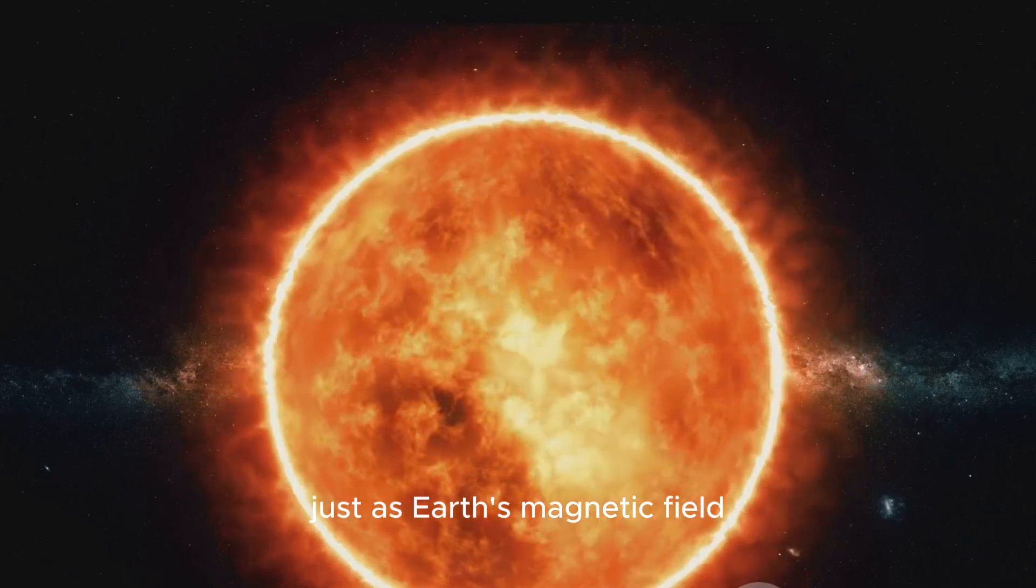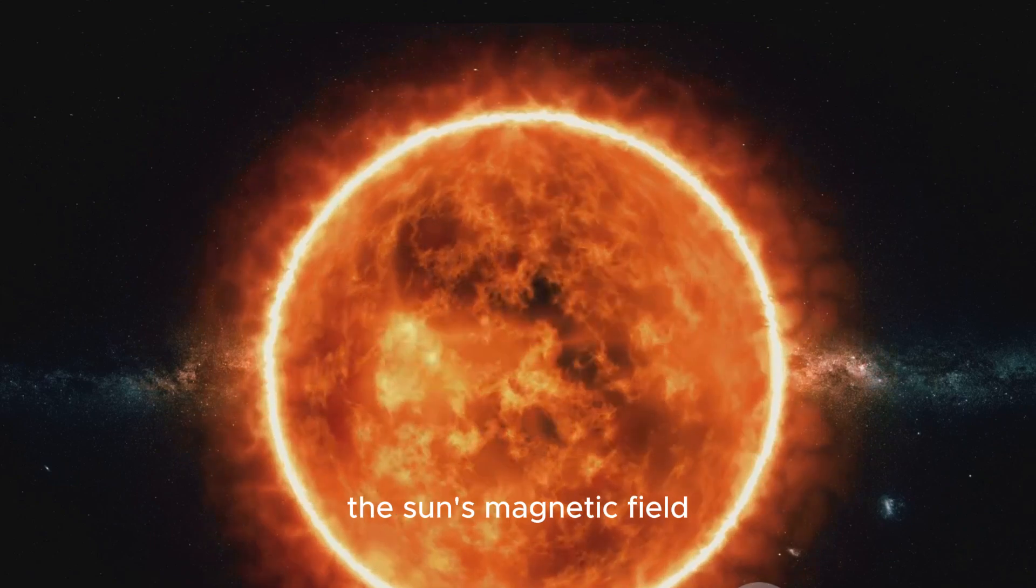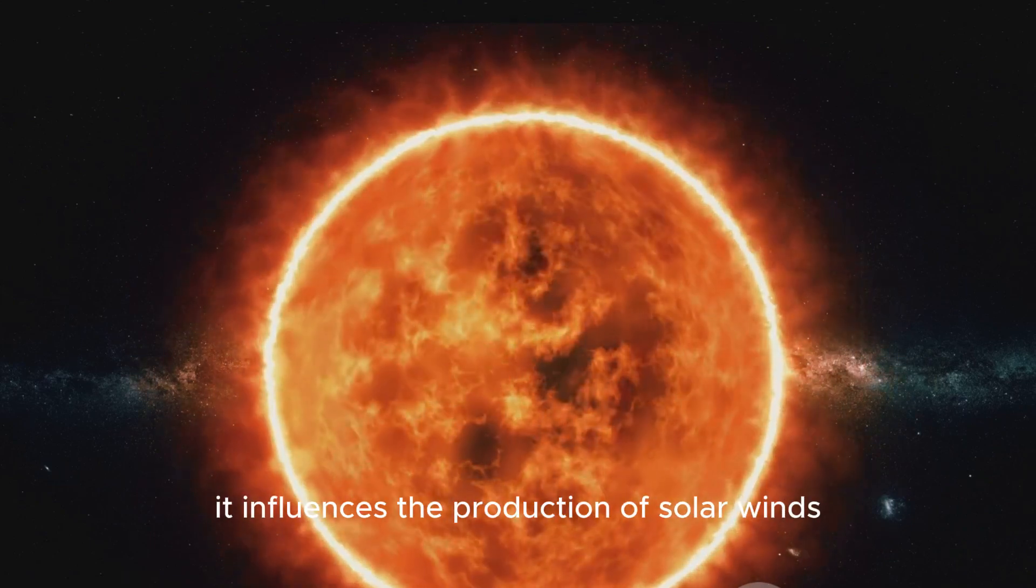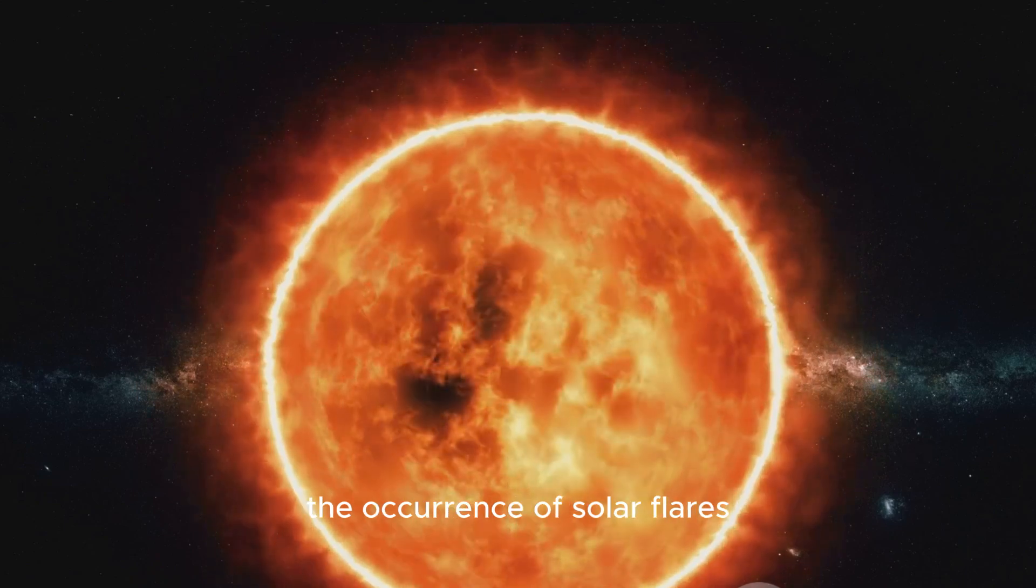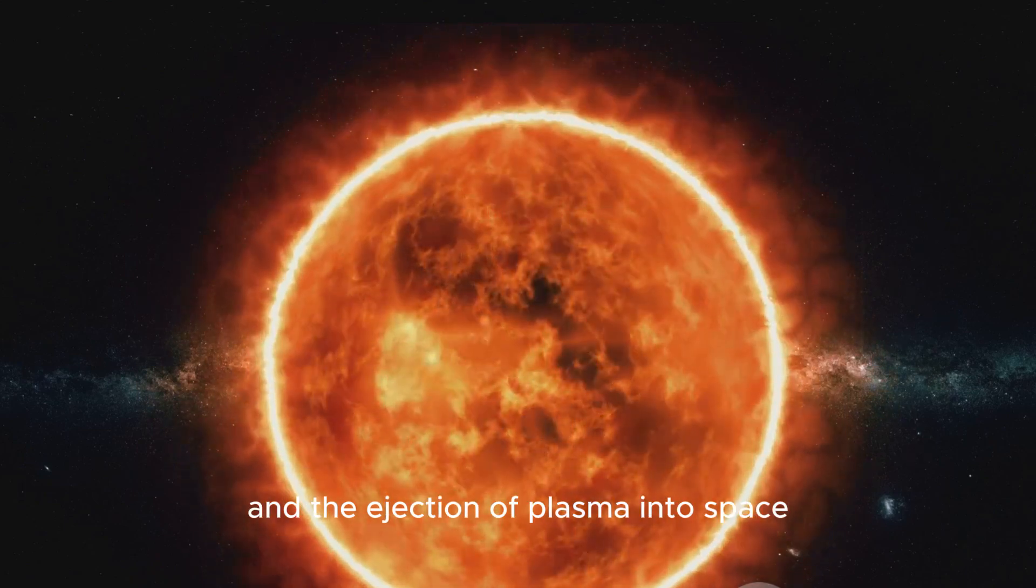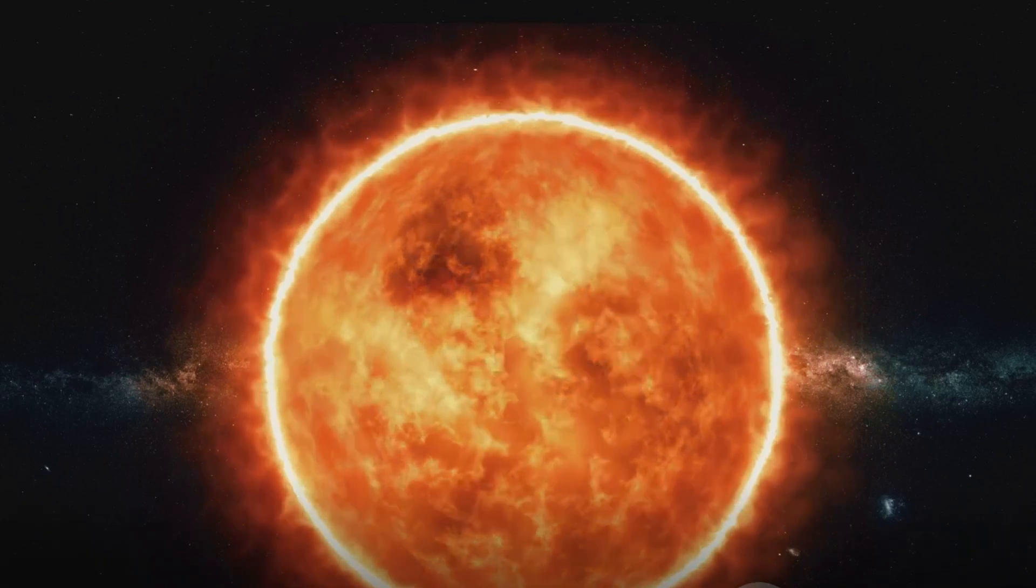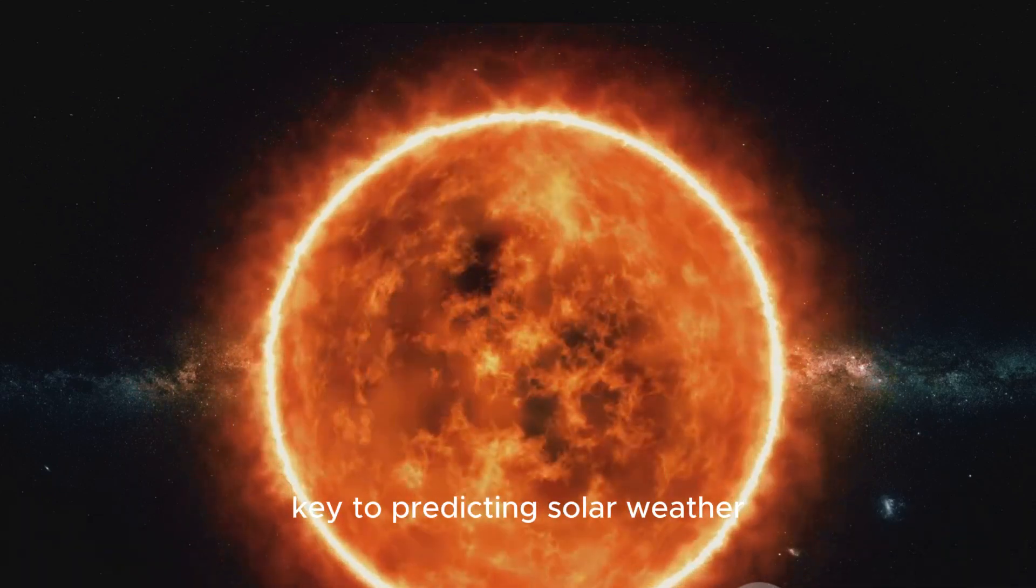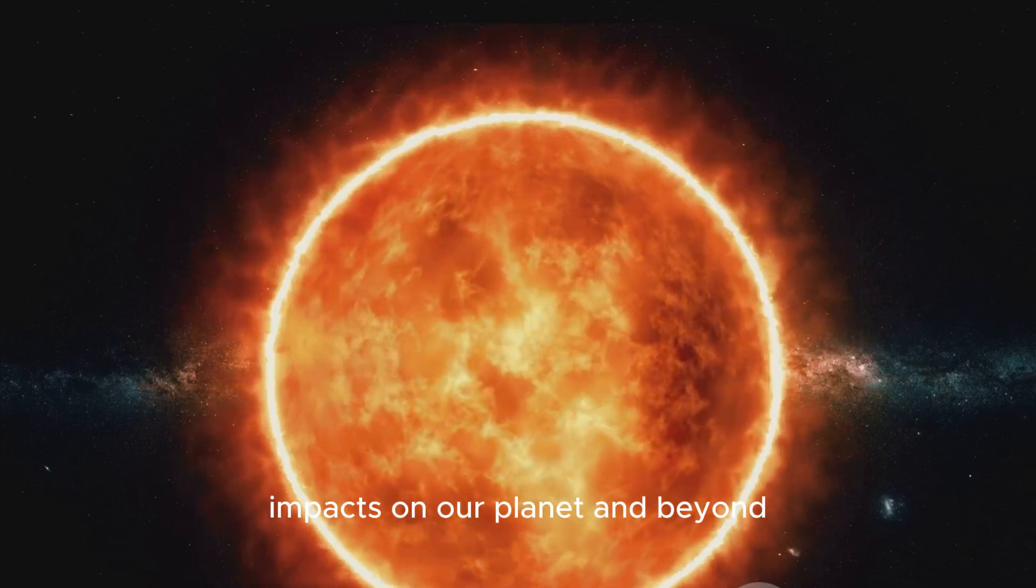Just as Earth's magnetic field protects us from solar radiation, the sun's magnetic field plays a critical role in regulating solar activity. It influences the production of solar winds, the occurrence of solar flares, and the ejection of plasma into space. Understanding this magnetic field and its cycle is key to predicting solar weather and mitigating its potential impacts on our planet and beyond.